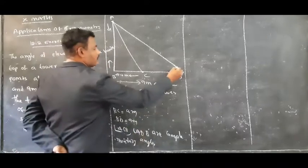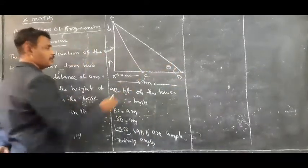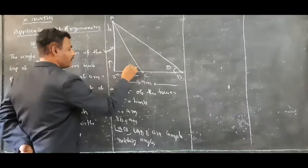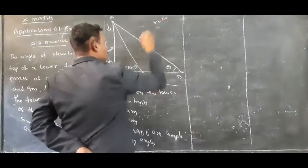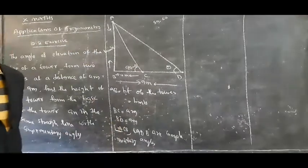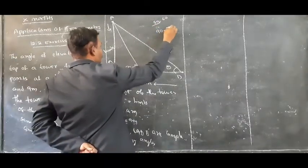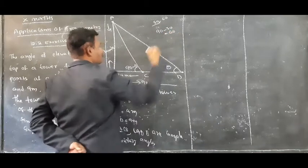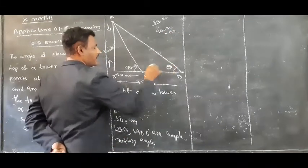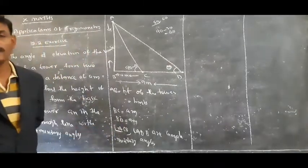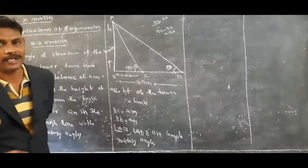If I take one angle as theta, then the other is 90 minus theta. For example, 30 and 60 are complementary angles. If I know 30, the second angle is 90 minus 30 equals 60. So if one angle is theta, the second angle is 90 minus theta, because the two are complementary angles.